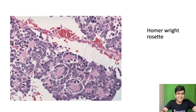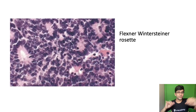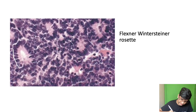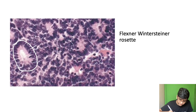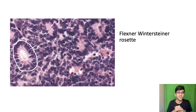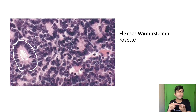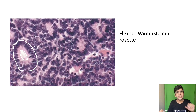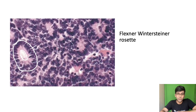Looking at the second rosette in the microscopy image: you can see tumor cells with a central lumen and pink cytoplasmic extensions from the surrounding cells converging toward it. This is exactly what we described — tumor cells, cytoplasmic extensions, and a central lumen. This is the classical Flexner-Wintersteiner rosette, confirming a diagnosis of retinoblastoma.